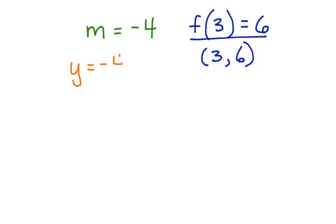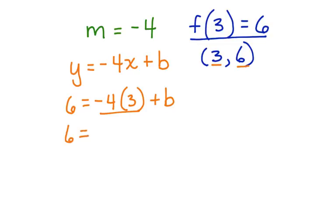y equals negative 4 for slope x plus b. Now let's substitute these two values for x and y into the equation. 6 equals negative 4 times 3 plus b. Now I'm going to multiply here. 6 is equal to negative 4 times 3 which is negative 12 plus b.